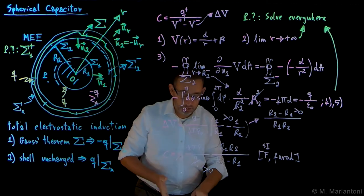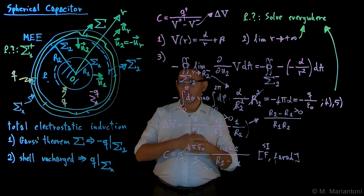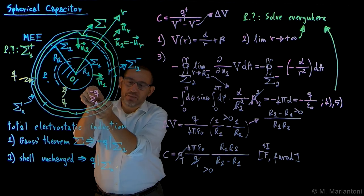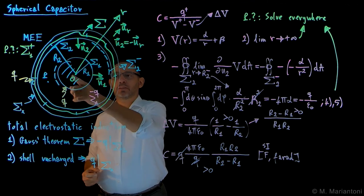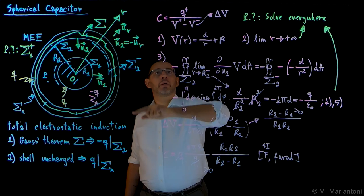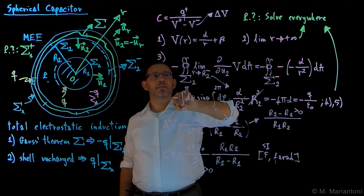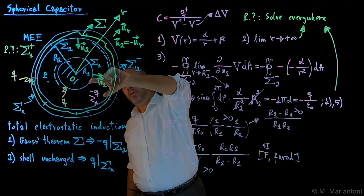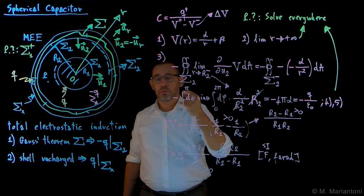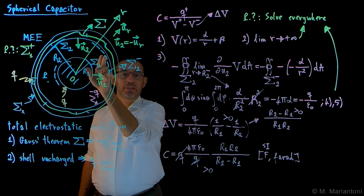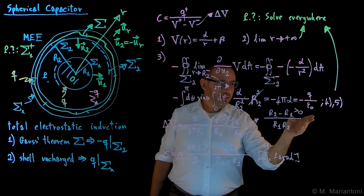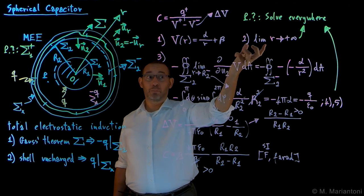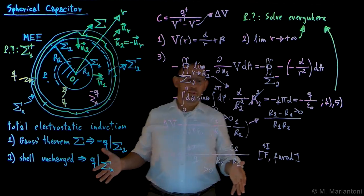To summarize: we considered a spherical capacitor comprising an inner hard sphere of radius R1 and a conducting shell with an inner surface at R2. Total electrostatic induction tells us that plus Q on the hard sphere induces minus Q on the inner surface of the shell. Capacitance is Q over delta V. Using spherical symmetry, V(r) equals alpha over r plus beta. Coulomb's theorem applied to sigma 2 minus gives alpha equal to Q over four pi epsilon naught. Beta cancels when computing delta V, and dividing by Q gives the final expression: C equals four pi epsilon naught times R1 R2 divided by R2 minus R1, which is a positive quantity in farads.